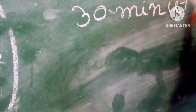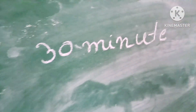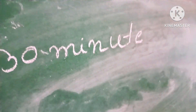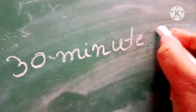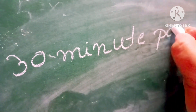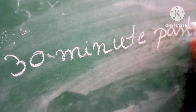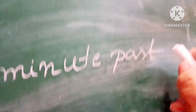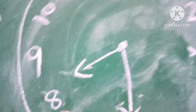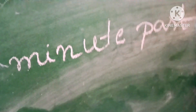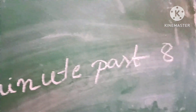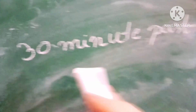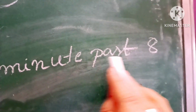Similarly, when the minute hand is at 6, that is 30 minutes. So we say 30 minutes past 8, or half past 8.